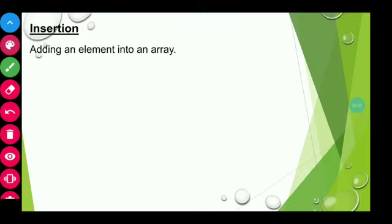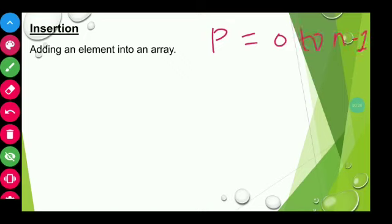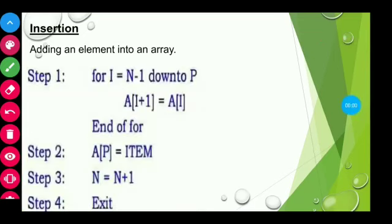Insertion is the process of adding an element into an array which is already having some set of elements. A new element can be added into an array at any position, say p, and this p should range from 0 to n minus 1. Before performing insertion, we have to make room for the new element so that it fits into that position. For that, all the elements from this position are shifted to their higher order positions. See the algorithm: for i is equal to n minus 1 down to p — the for loop starts from the end of the array and repeats until it reaches the specified position.